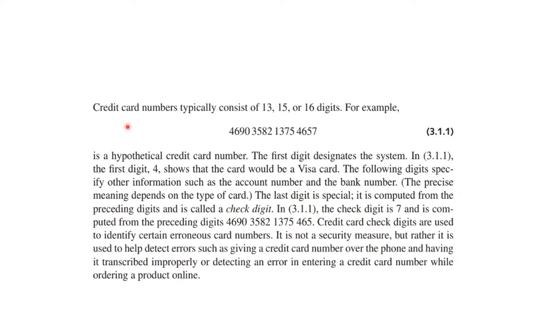To give you an example from information technology or computer science, credit card numbers consist of a whole bunch of digits, and these describe such things as what kind of card it is, what is the bank routing number, and so on. The last digit is special - it's called a check digit, in this case it's a seven, and it's computed from the preceding digits and used to identify certain errors. It's not really a security measure, but rather it's used to detect errors when people are inputting their credit card over the phone or having it transcribed improperly, like when ordering a product online.